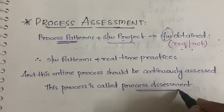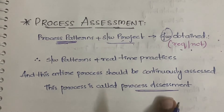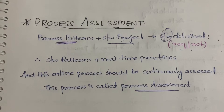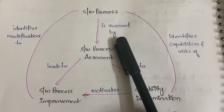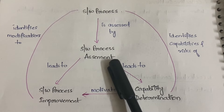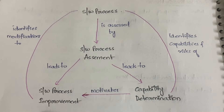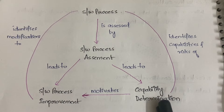This process is called process assessment. That is why I said you need to understand process patterns first. I'll explain it with a diagram as well so it will be more clear. In the diagram associated with process assessment, the software process is assessed with the help of a technique called software process assessment. From software process assessment you get two things: process improvement and capability determination.